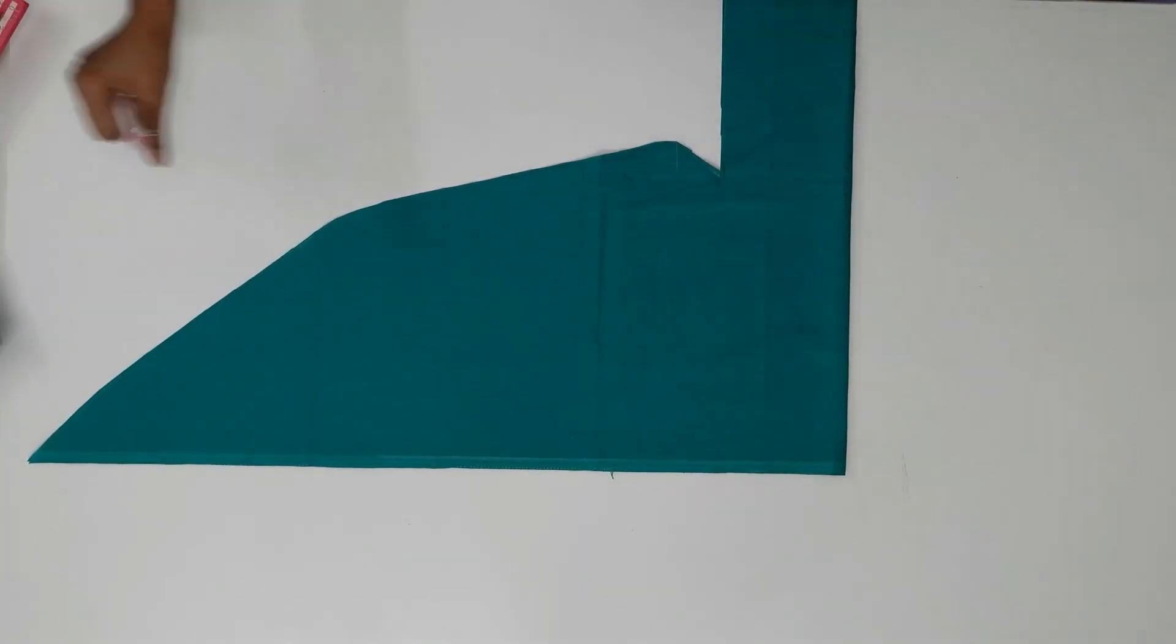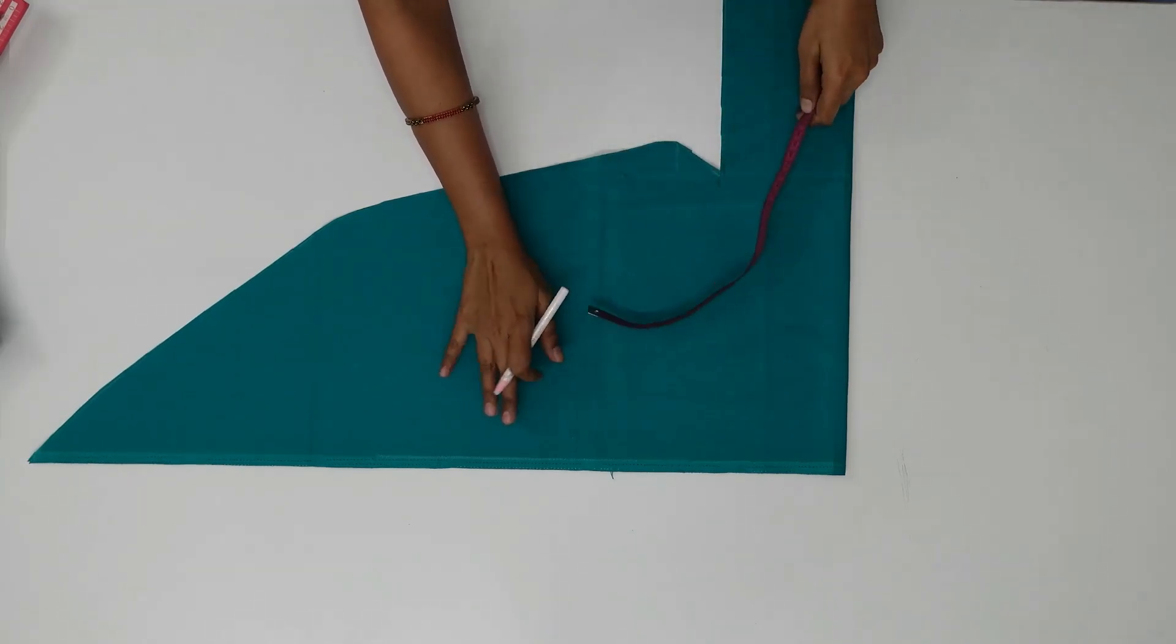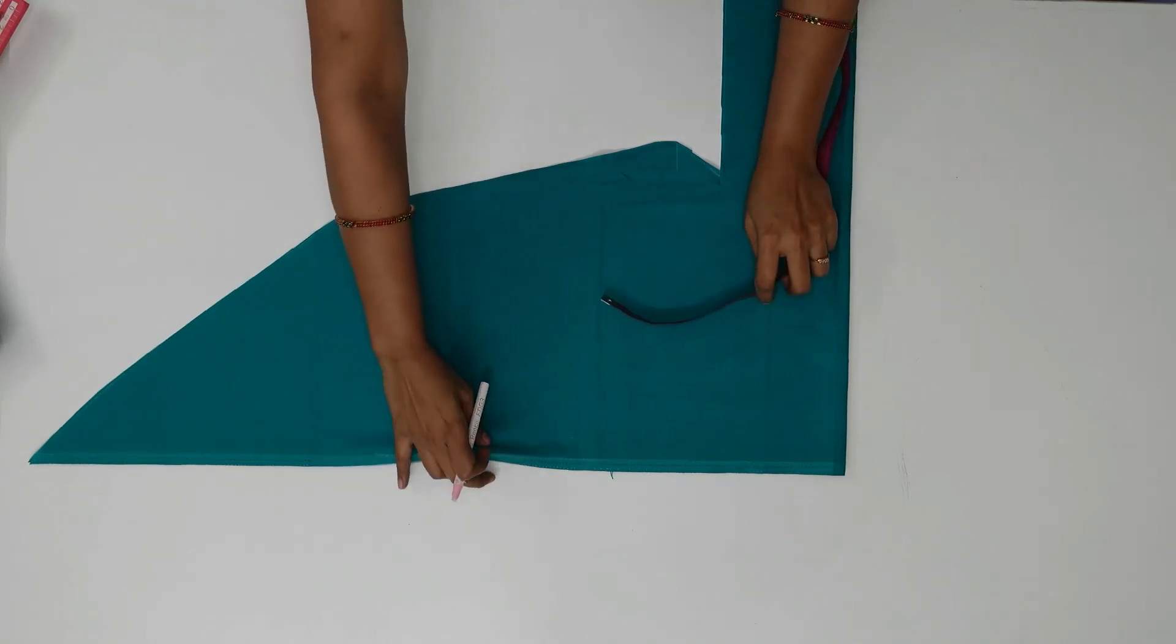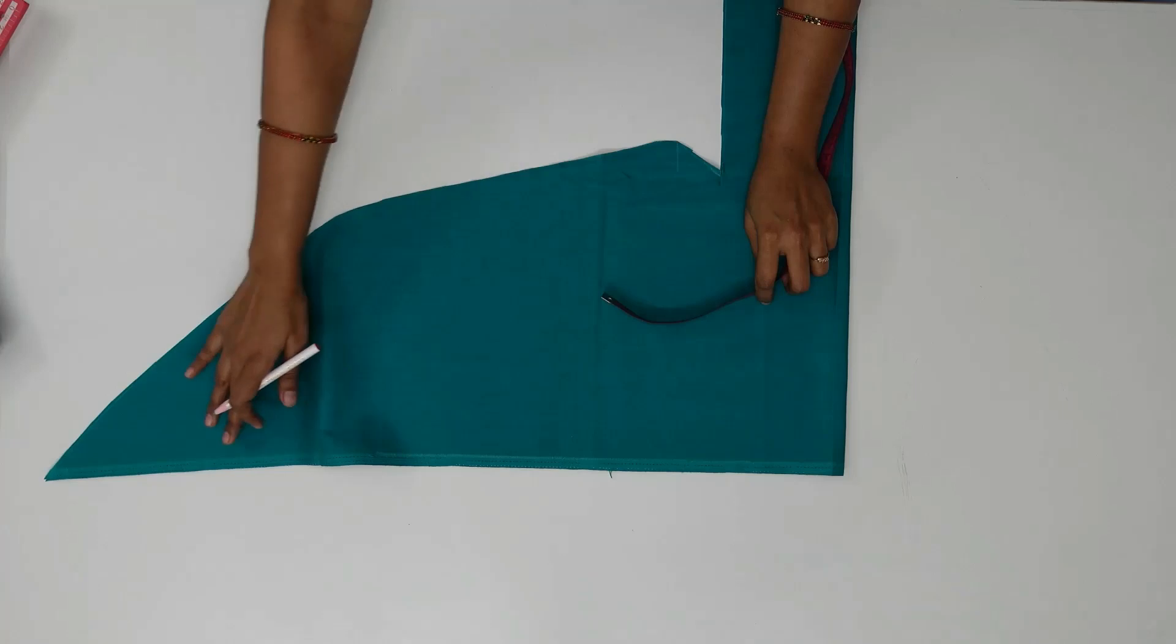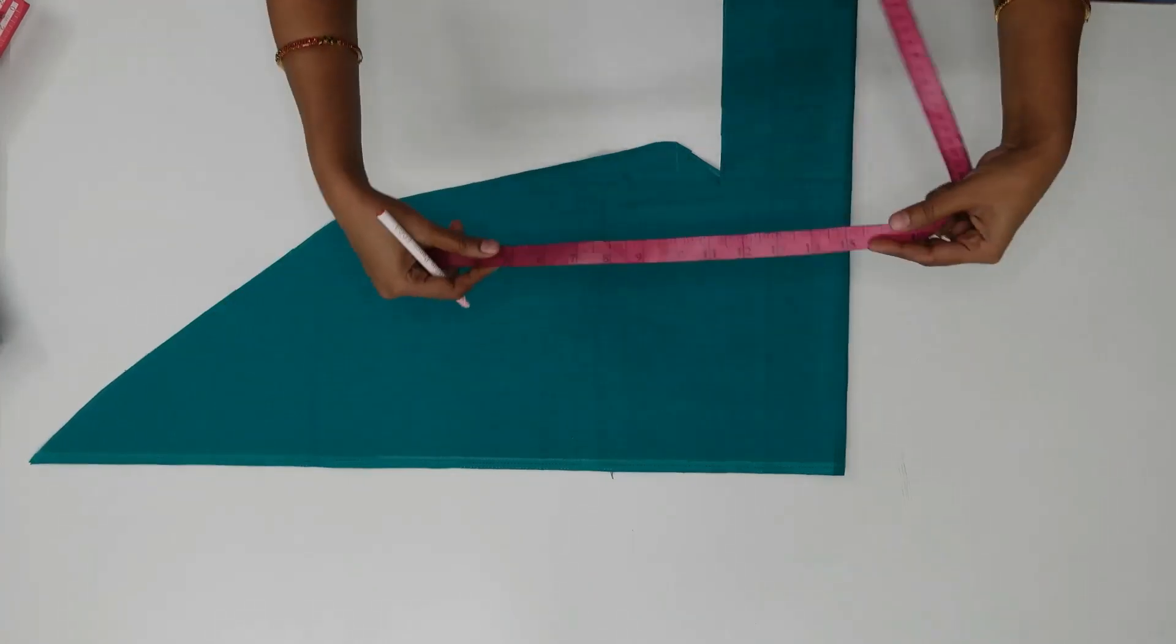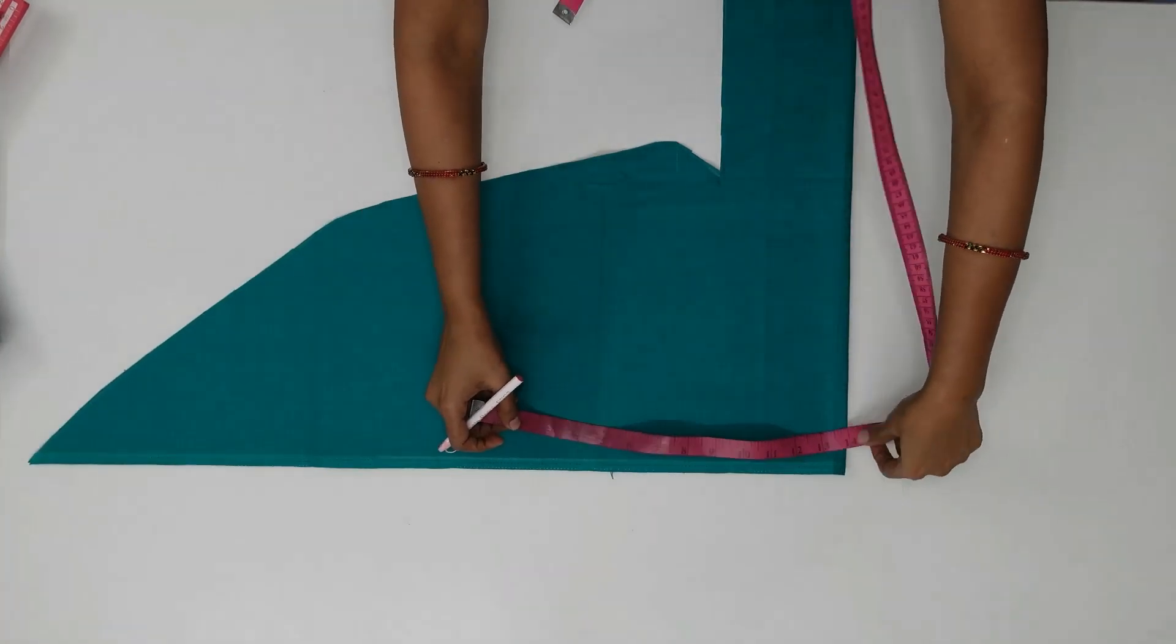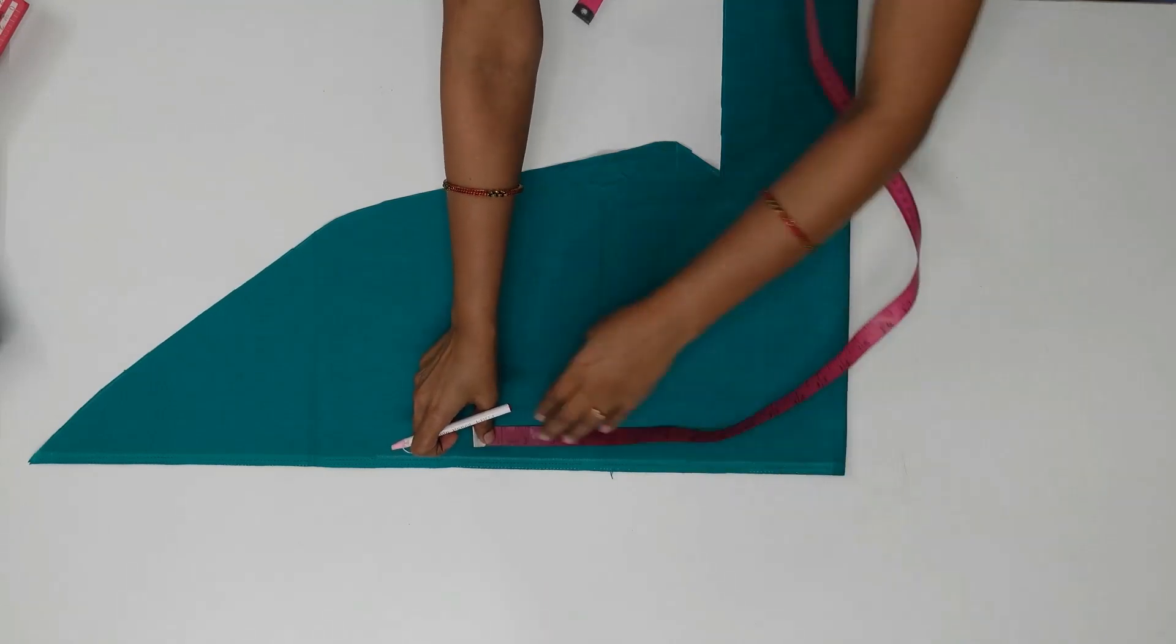Here I need waistband around 54 inch including the seam allowance. Since it has 4 layers, I am dividing it by 4. So 54 by 4 is 13 and half here. So I am marking 13 and half.